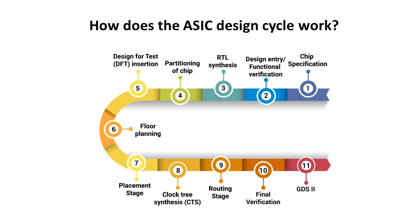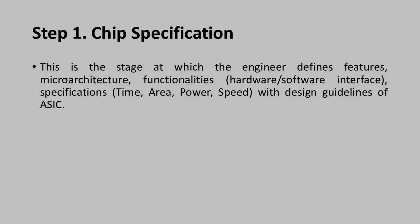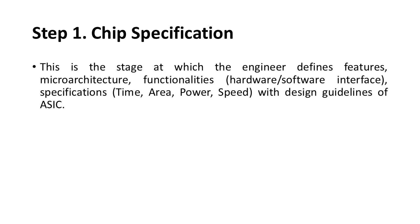This figure shows various steps in ASIC design flow — total 11 steps. Step 1: Chip Specification. This is the stage at which the engineer defines features, microarchitecture, functionalities, hardware and software interface specifications, time, area, power, speed, and design guidelines of the ASIC.